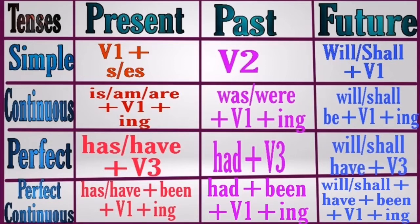In simple future tense, we use 'will/shall' plus V1. If a sentence has 'will' or 'shall,' it is future tense. In future continuous tense, we use 'will/shall' plus 'be' plus V1 plus '-ing.' In future perfect tense, we use 'will/shall' plus 'have' plus V3 — notice V3 is the same across all perfect tenses.